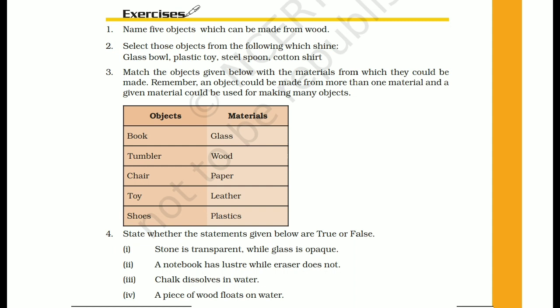Only two objects shine. Now the next question is to match the objects given below with the materials from which they could be made. You have to join each object with the material from which it can be made.